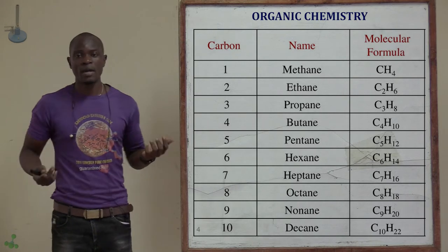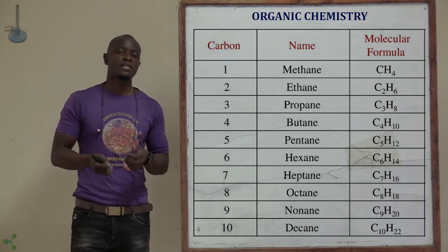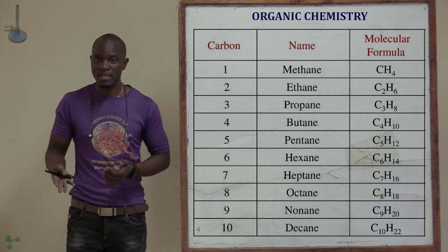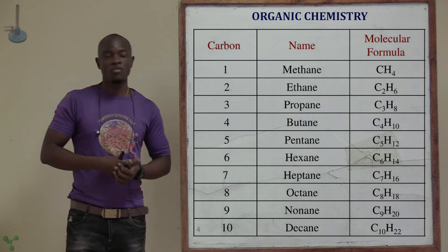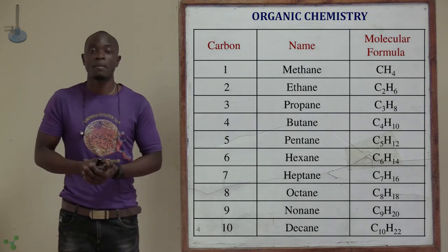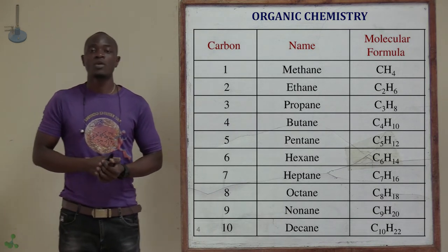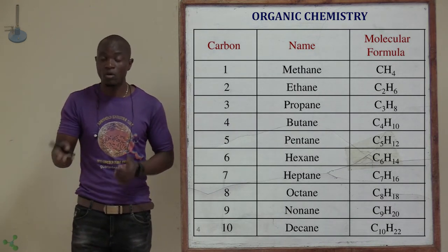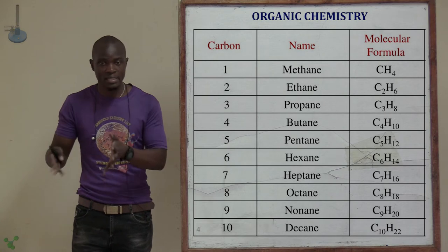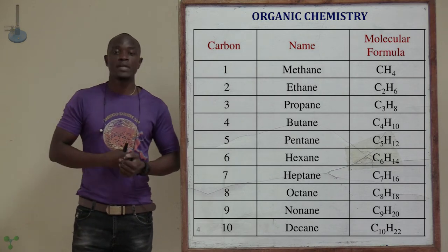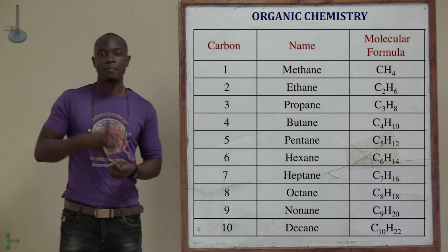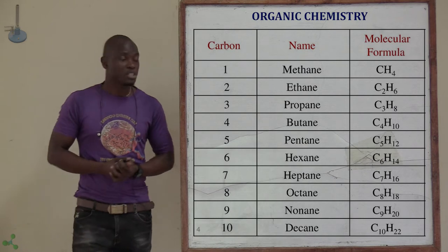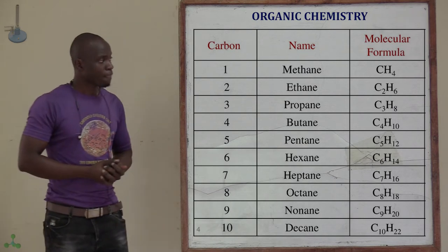And so on. The next one is heptane, which is number seven. We have octane, which is number eight. We have nonane, which is number nine. And finally, we have decane, which is number ten.